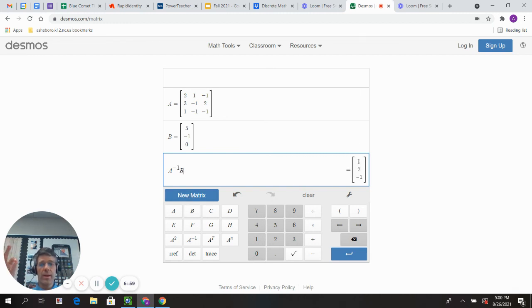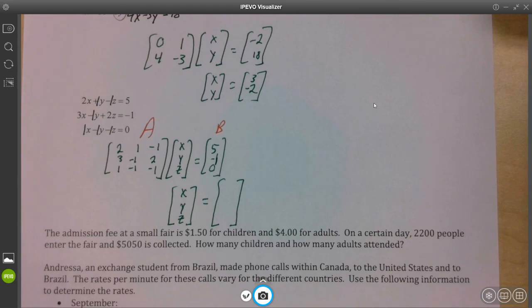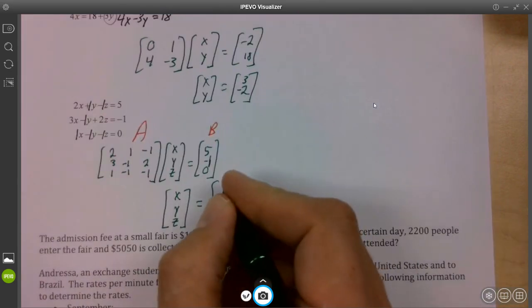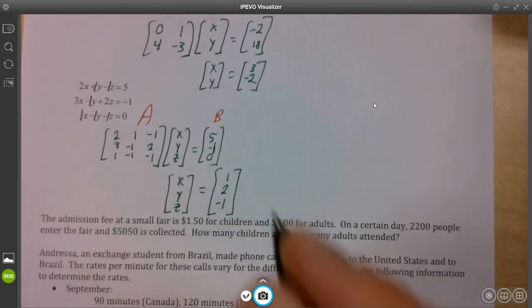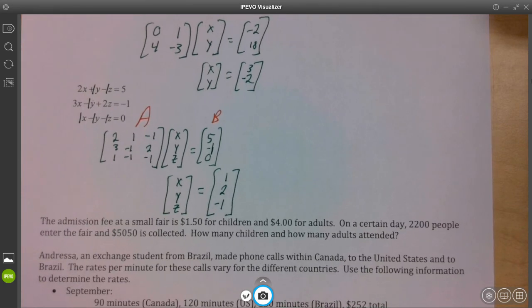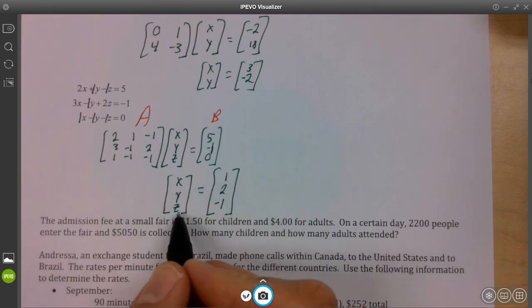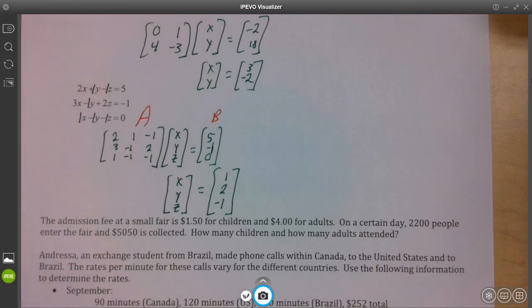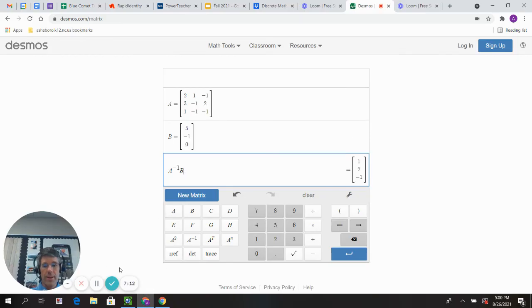A inverse B, one, two, negative one. So here we go. One, two, negative one. So what that really tells me is that X is one, Y is equal to two, Z equals negative one. There you go.